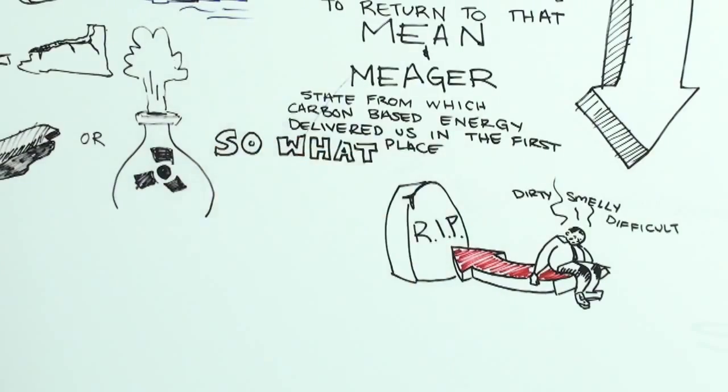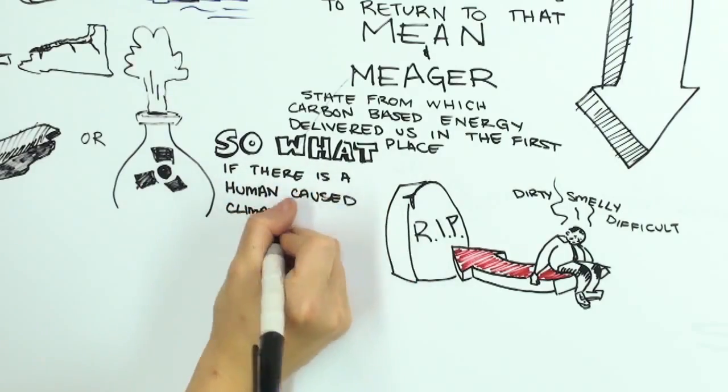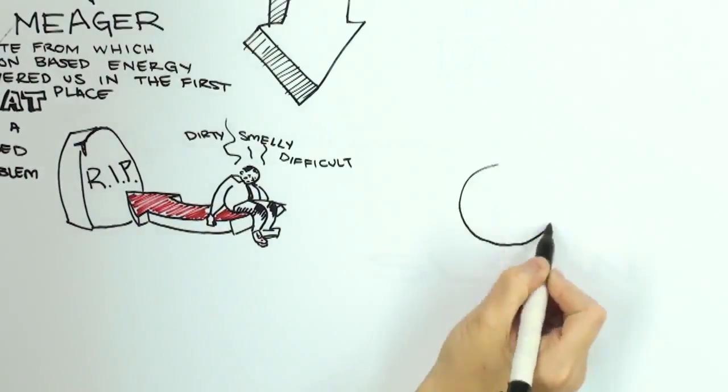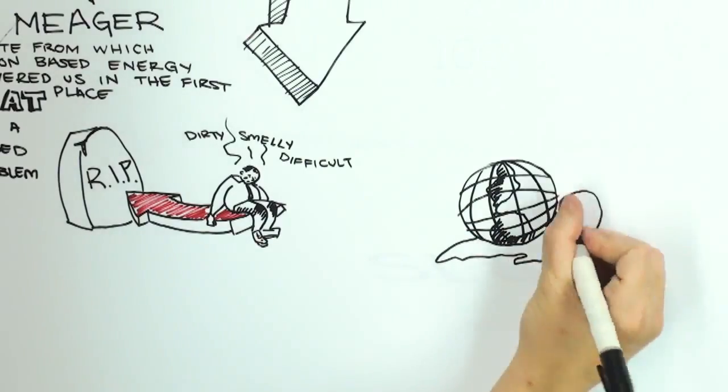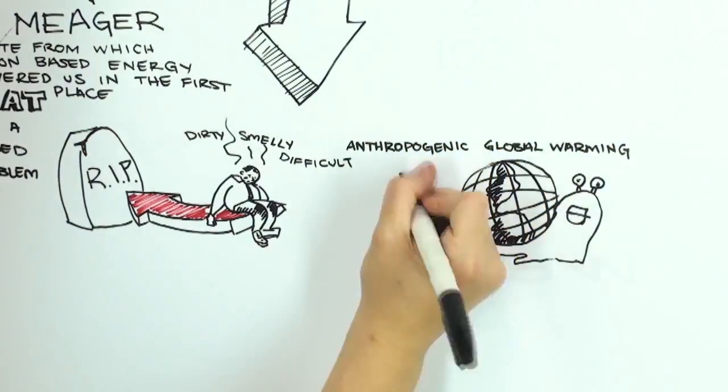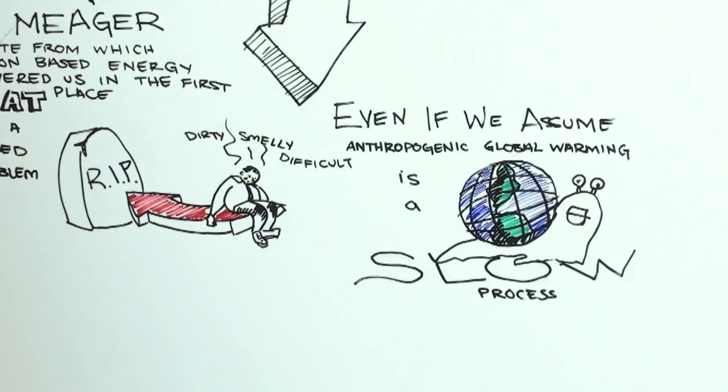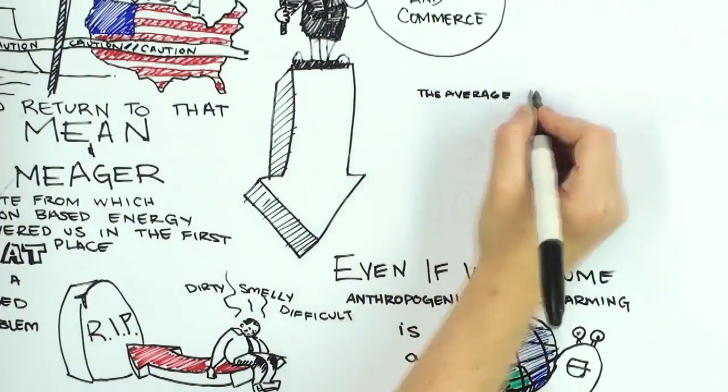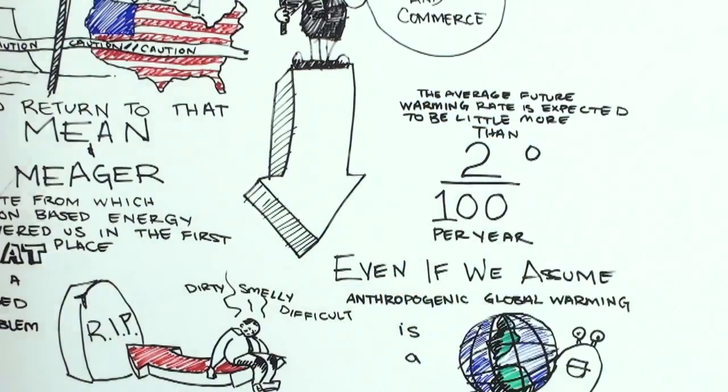So what is the answer? If there is even an actual human-caused climate problem, which as of yet remains mostly conjecture? Well, to the extent that it actually exists, anthropogenic global warming is a slow process. Even if we assume that the current predictions of a sensitive climate system are correct, the average future warming rate is expected to be little more than two hundredths of a degree Celsius per year.